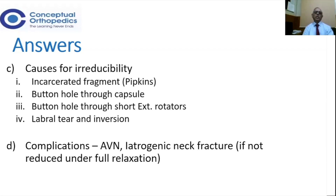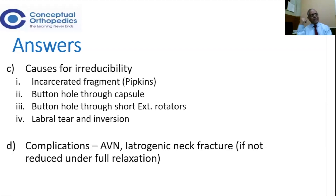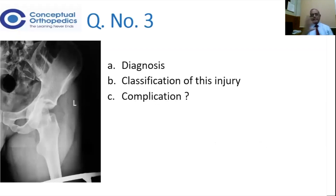Now we come to the complications. What are the complications when the head is dislocated? Do they depend on the timeline, the type of injury, or the severity? Late complications, as you know, include AVN, which can occur in 20 to 30% of these cases. And iatrogenic complications, which you and I can cause when trying to reduce with force, include fracture of the neck of the femur — even with full relaxation.